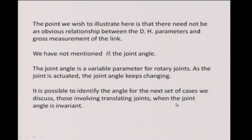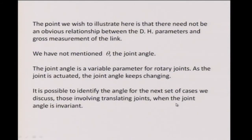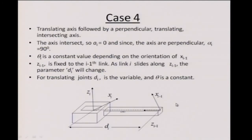One thing you have to be ready for when using DH parameters is that your intuitive sense of the size of a link may not come out, but it is a unique set which works pretty well. So far we have not talked about the joint angle theta_i at all — that is because we have only been dealing with rotary joints where it is variable. In the next set of cases, those involving translating joints, we will identify theta.